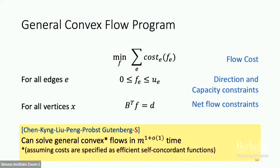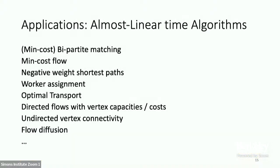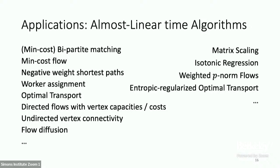But our framework actually goes much further. We can solve general convex flows in almost linear time. Over the space of feasible flows, you can minimize any convex function representable as a sum of convex functions of flows on edges. This framework captures many more problems. For the first time, this gives almost linear time algorithms for bipartite matching, min-cost flow, negative edge shortest path, diffusion, optimal transport, matrix scaling, isotonic regression, and weighted p-norm flows.